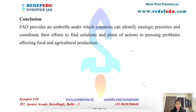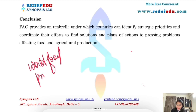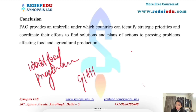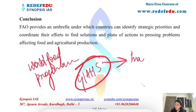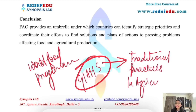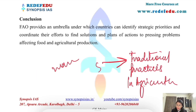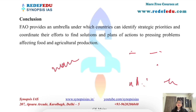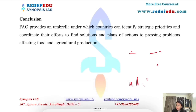Looking at some important initiatives of FAO: the World Food Program is one of the key initiatives of this organization. Another initiative is the Globally Important Agricultural Heritage Systems (GIAHS), which encourages and promotes traditional practices in agriculture. FAO also publishes important reports such as the State of World Forests report, State of World Agriculture report, State of Food Security and Malnutrition in the World report, State of World Fisheries and Aquaculture report, and the State of Food and Agriculture report.